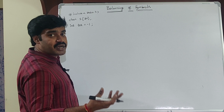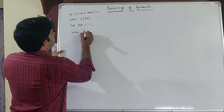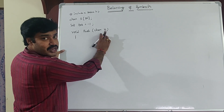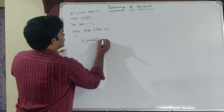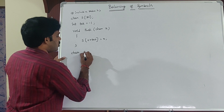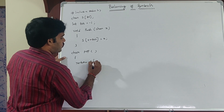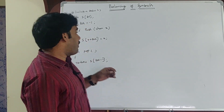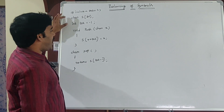Since we are using a stack data structure, we need to write definitions for the push and pop functions. For push: void push(char x), where x is the opening symbol — parenthesis, bracket, or brace — and the body is s[++TOS] = x. For pop: char pop(), which returns s[TOS--]. These are the shortcut implementations for push and pop. The stack is declared globally and TOS is initialized to -1.